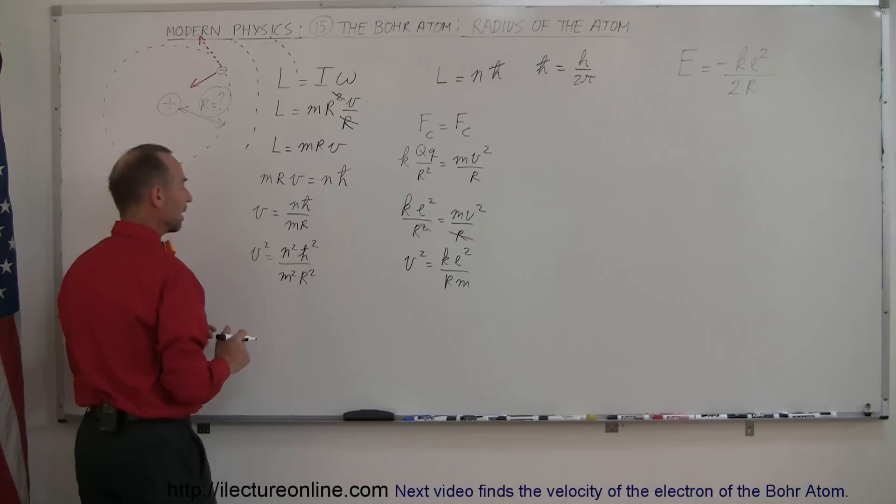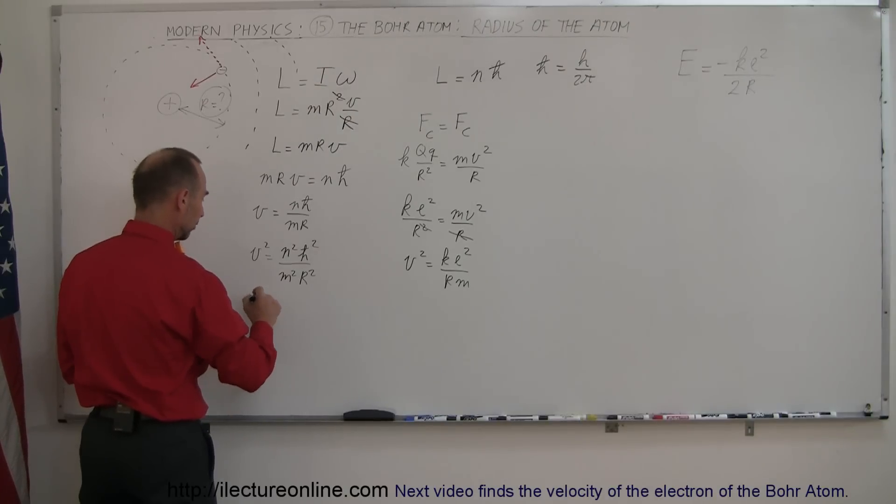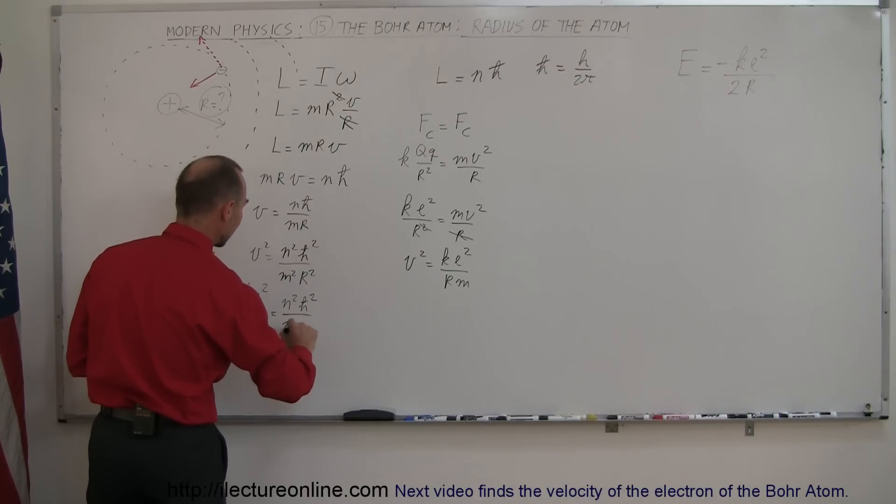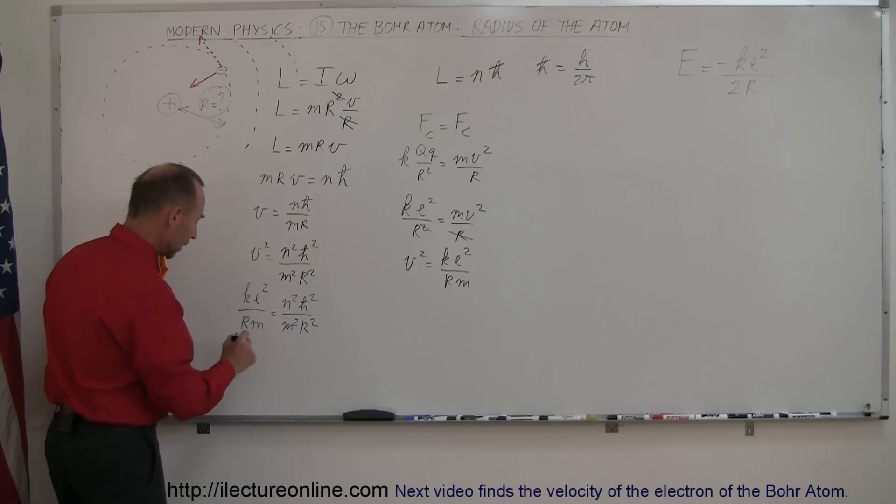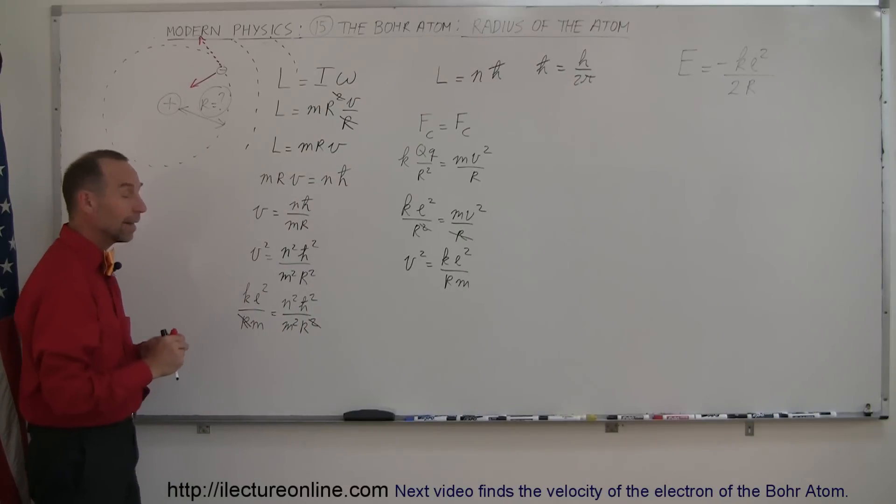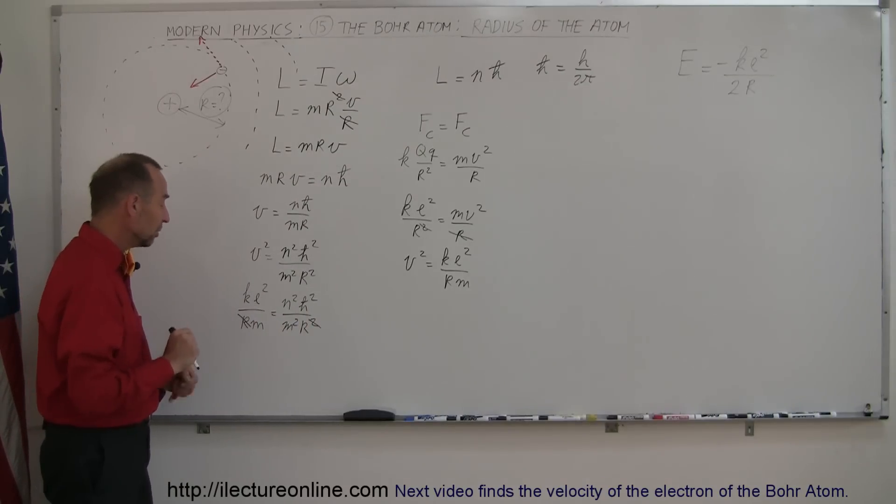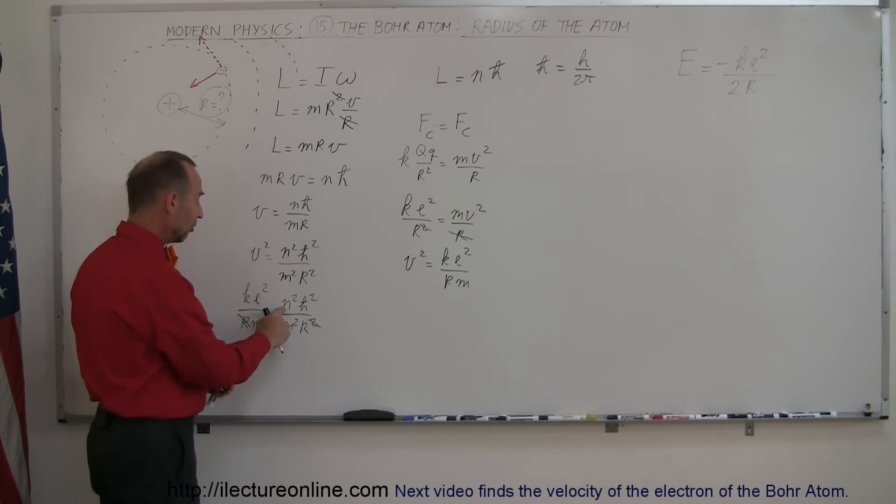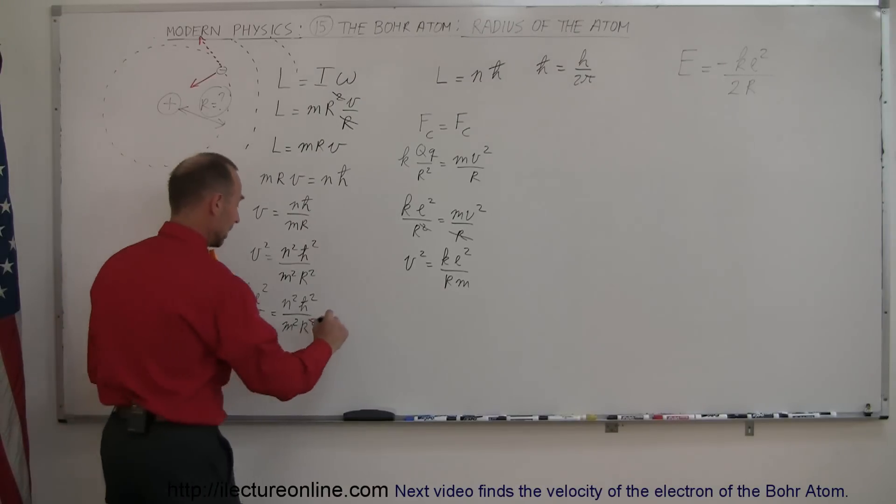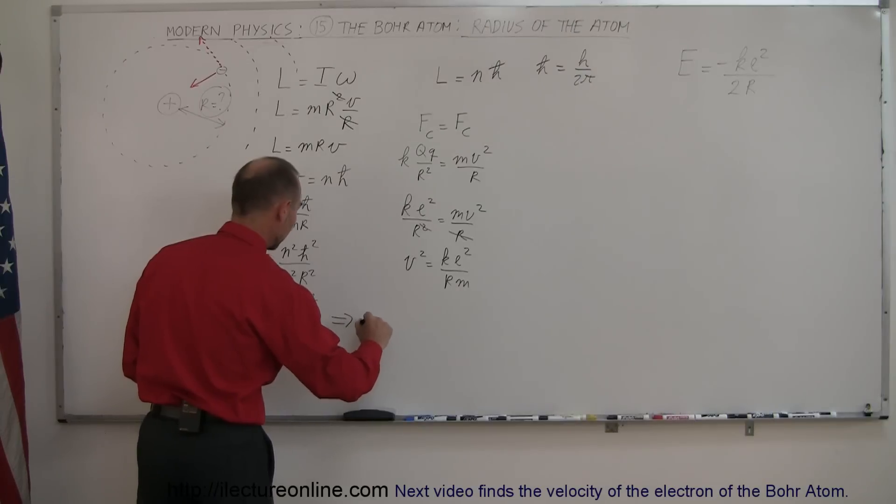Here we also have a relationship between r the radius and the velocity. If we can set these two equations equal to each other, we can eliminate v. To do that we have to square this equation, so v² = n²ℏ²/(m²r²). If we set this equal to ke²/(rm), this whole equation no longer contains v and only contains r.